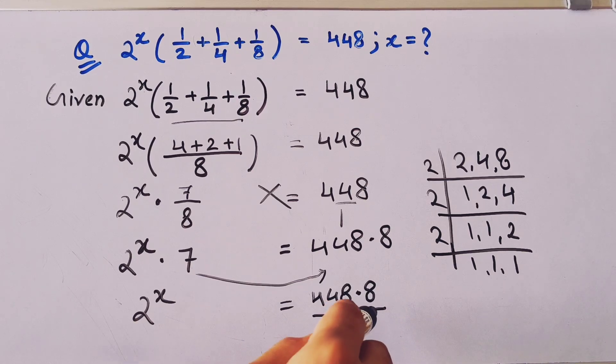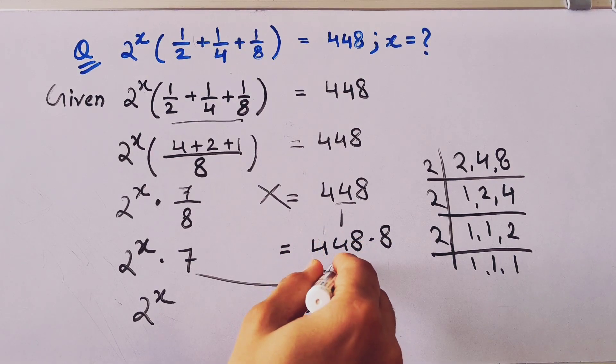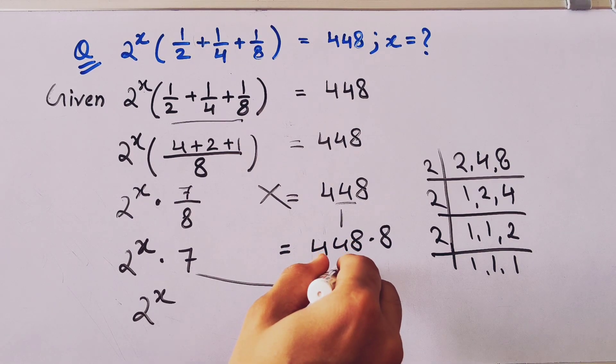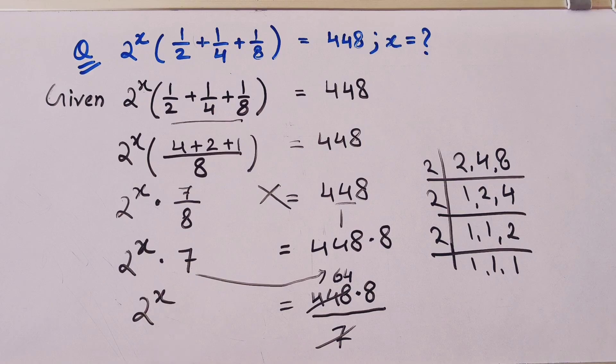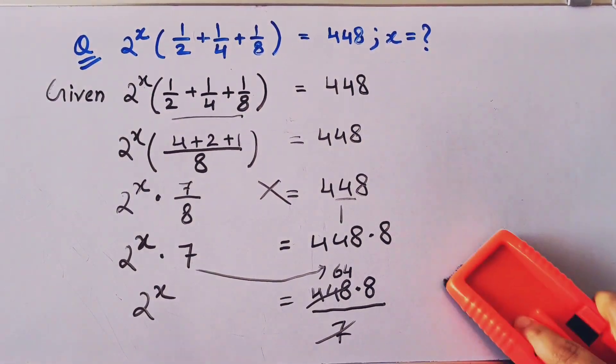Now what we'll do, we'll divide with 7. So 7 sixes are 42 and 7 fours are 28. So we have 2 to the power x equal to 64 times 8.